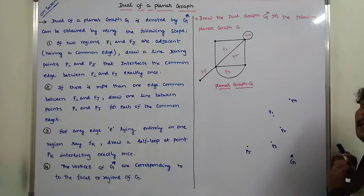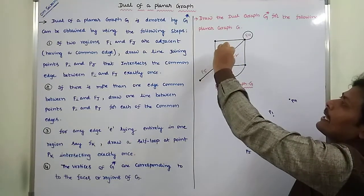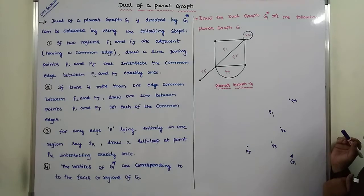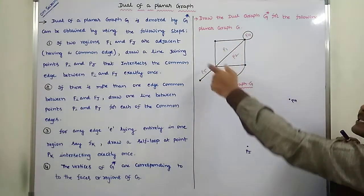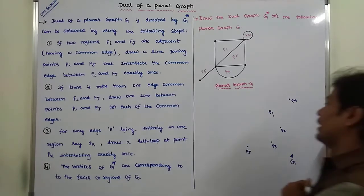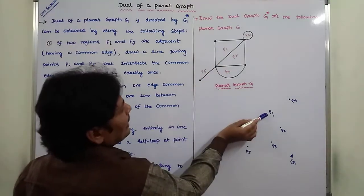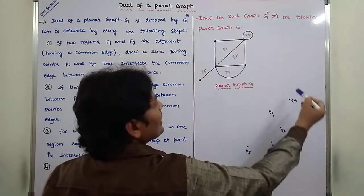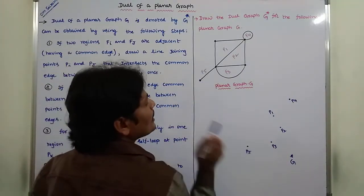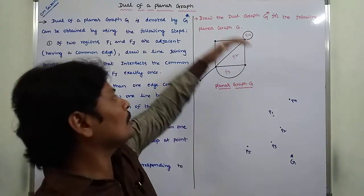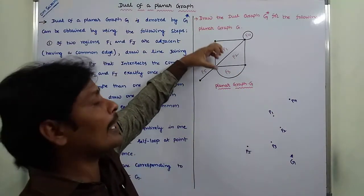How many vertices are in the dual of planar graph G*? The number of faces or regions in the given planar graph is equal to the number of vertices in the dual of planar graph G*. There are five regions, so there are five corresponding vertices in G*. F1 region corresponds to vertex P1, F2 to P2, F3 to P3, F4 to P4, and F5 to P5.